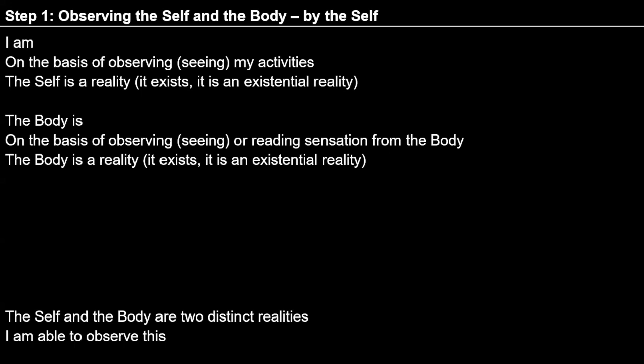The objective of Step 1 is simply to see that there are two distinct realities. If there are two distinct realities, then I have many choices while interacting with the body. If there is only one reality — only the body, only physical-chemical activities — then we don't have many options. But with the observation that I exist and body exists, both separately, we have choices: whether to pay attention to the body or not. That's why Step 1 is very important.